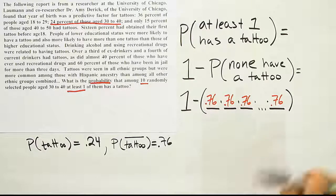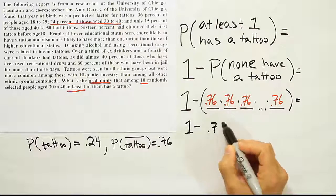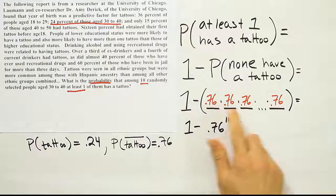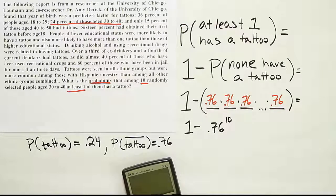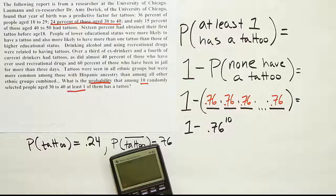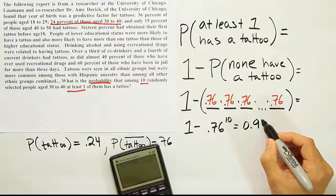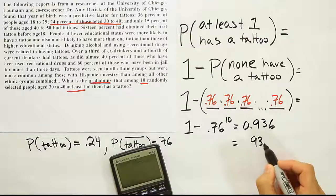All right. Now from there, it's a matter of just working out these numbers then. It's going to be 0.76 to the 10th power. Because there'll be 10 of these 0.76 since I took 10 randomly selected people. Let's see what that works out to be when we do that. So we'll end up having 1 minus 0.76 raised to the 10th power. When we finish that calculation, we end up with the following result: 0.936. So this is basically 93.6%.